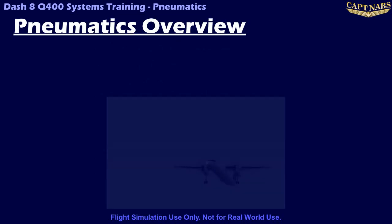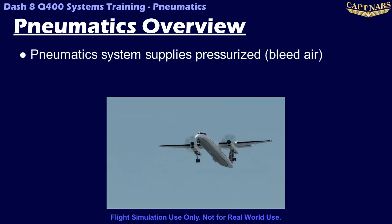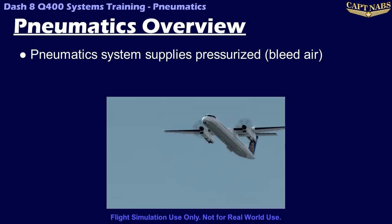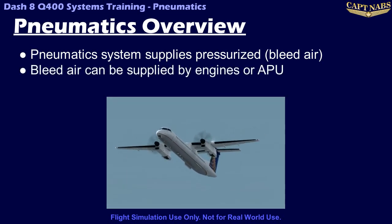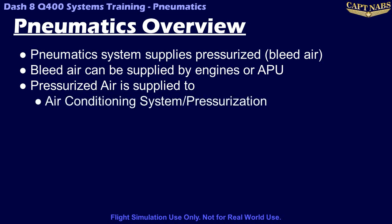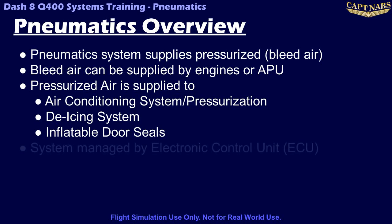The pneumatic system on the Dash 8 Q400 supplies pressurized air to the various systems that require it and is one of the simpler systems on the Dash 8. Pressurized air or bleed air on the Q400 can be supplied by either the engines or the APU. Bleed air is primarily used for cabin air conditioning and pressurization, but also provides a source of pressurized air for wing, tail, and engine inlet de-icing as well as pressurizing the door seals. An ECU or electronic control unit monitors the bleed and air conditioning systems together and regulates all the valves to provide the required air flow for pressurization and air conditioning.